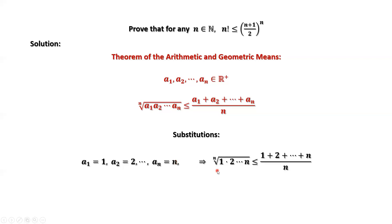Then we have the nth root of 1 times 2 times 3 until times n, less than or equal to 1 plus 2 plus 3 plus until plus n, divided by n.